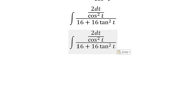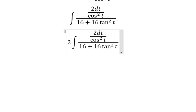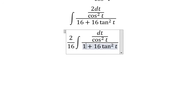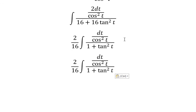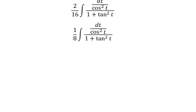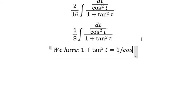We put 16 outside and 2 outside, that's 2 over 16. 2 divided by 16 gives us 1/8. Next we have 1 + tan^2 t equal to 1 over cos^2 t.